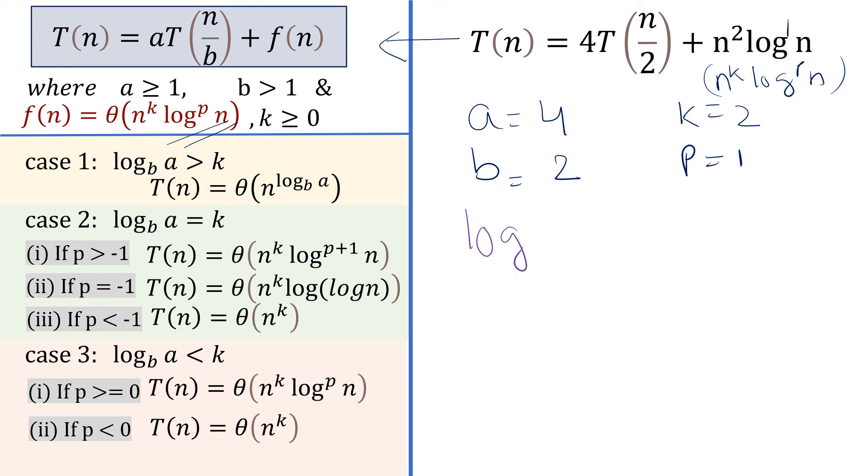Having found this, now you have to find the value of log_b a which is log_2 4, and this is 2. k is also 2. log_b a and k are equal since both values are 2. Which case does it belong to? It belongs to case 2. k is 2 and since p is 1, which is greater than minus 1, our solution will be this.